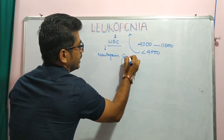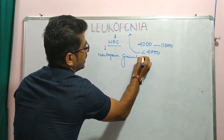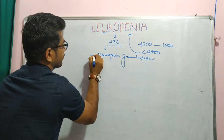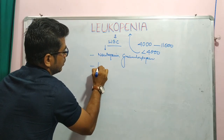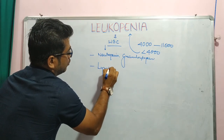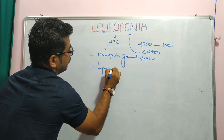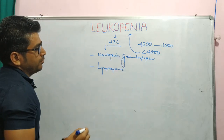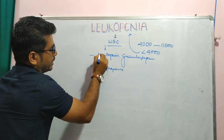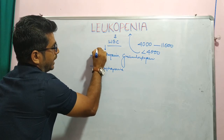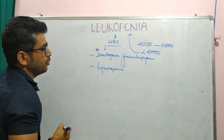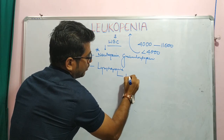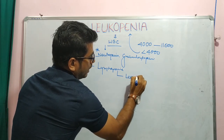Leukopenia comprises neutropenia, granulocytopenia, and lymphopenia. Robin says that leukopenia basically comprises neutropenia, which is very common in leukopenia, and lymphopenia, which is less common.